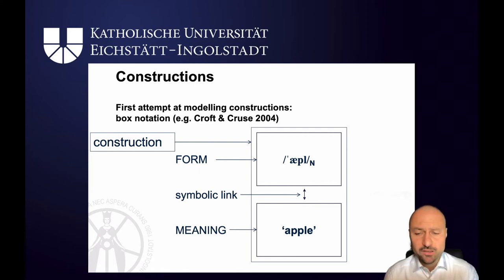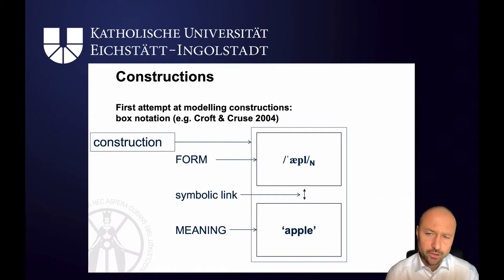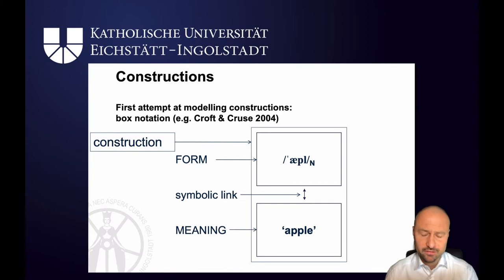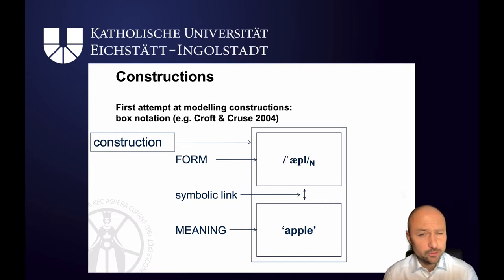This has important consequences because from a conceptual point of view we treat it as a thing, as a holistic entity. And on the syntactic level it means that we're going to use it in places where nouns can go — 'the apple', 'two apples' and so on. This is one way of representing a construction, and this is modelled on the box notation used by Croft and Kruse in their introduction to cognitive linguistics.